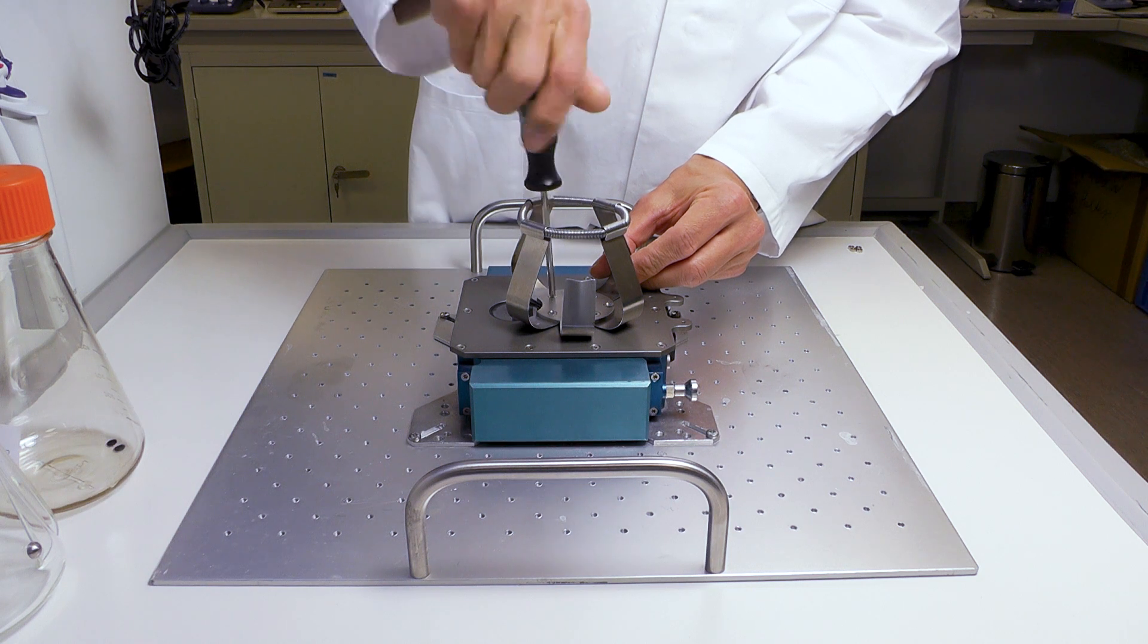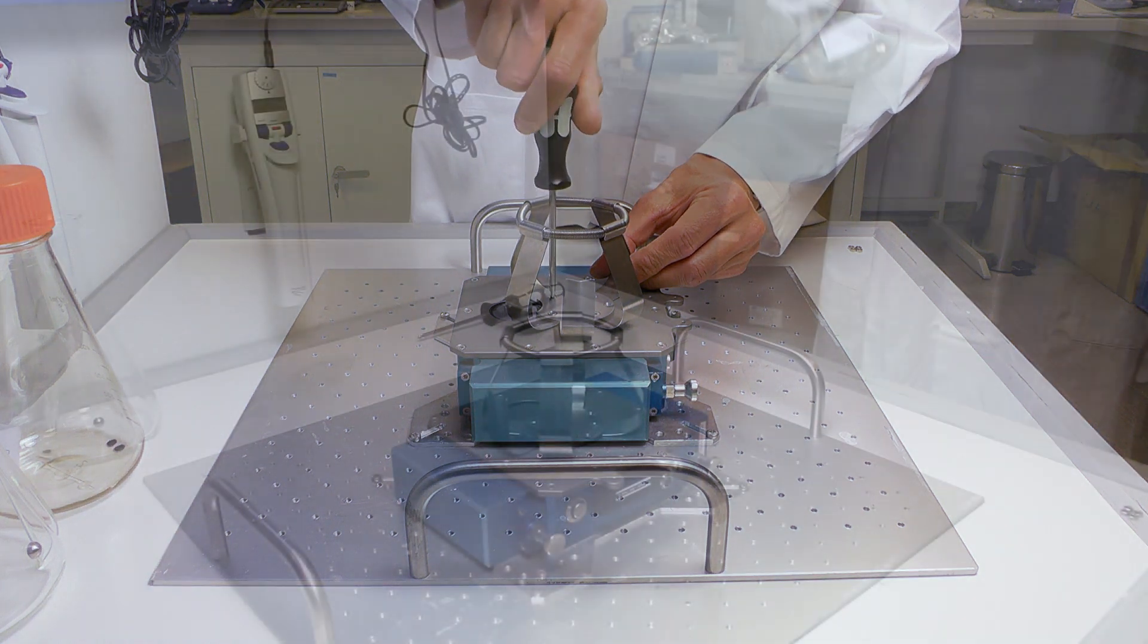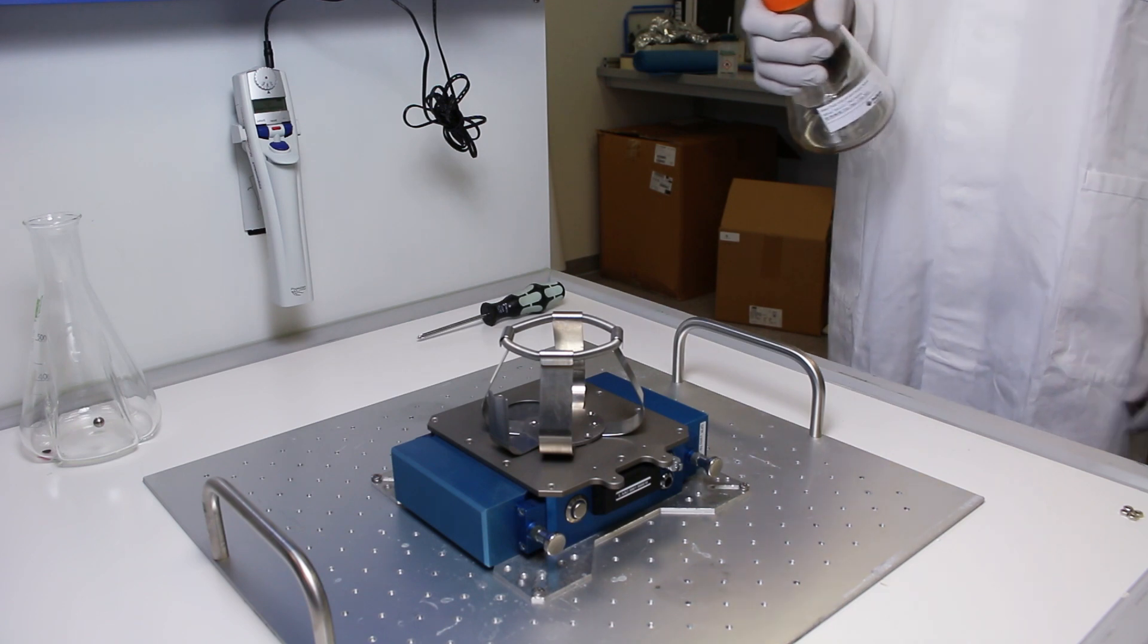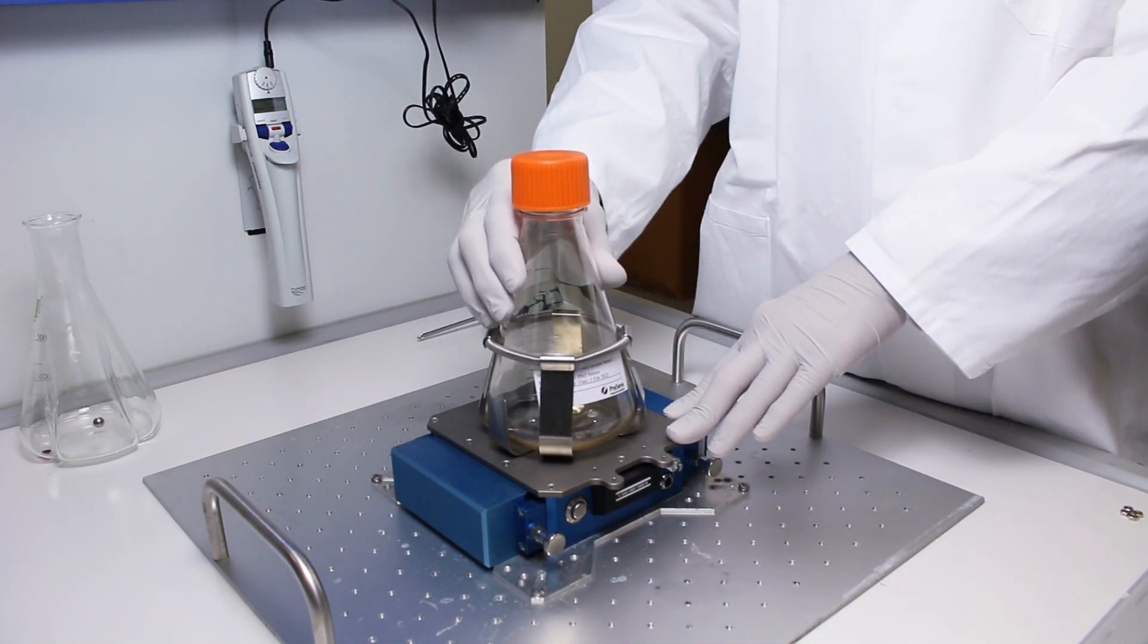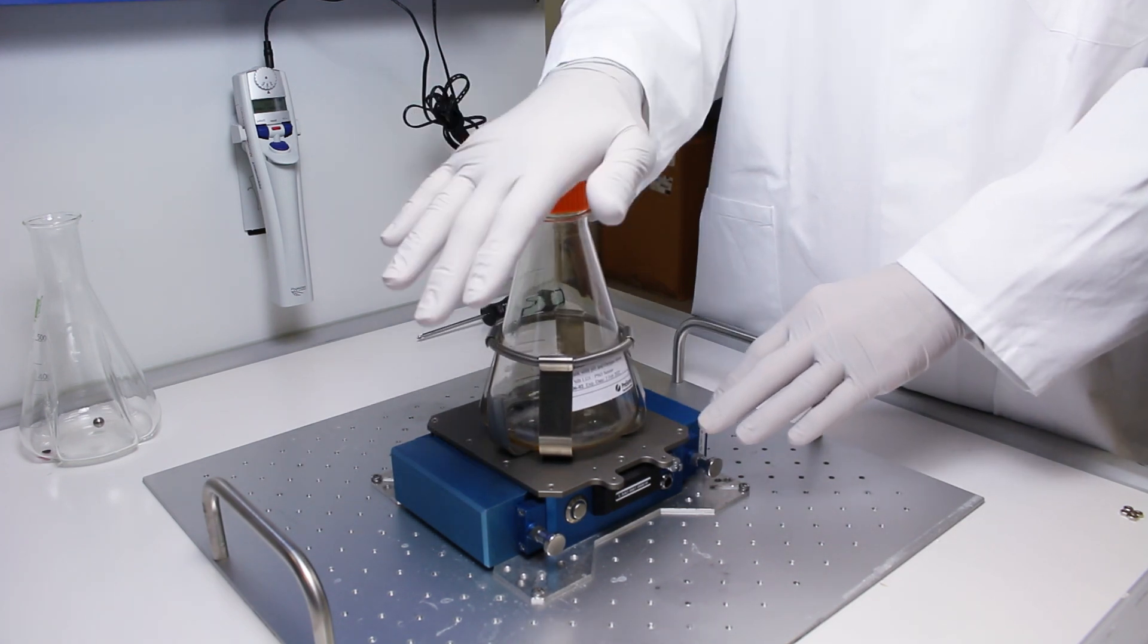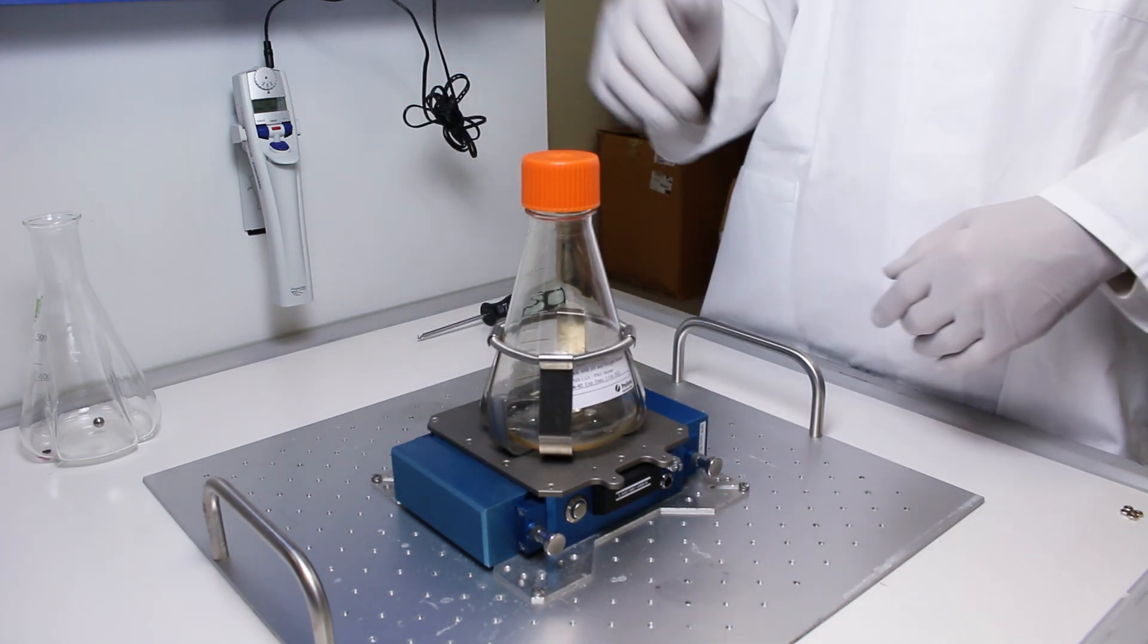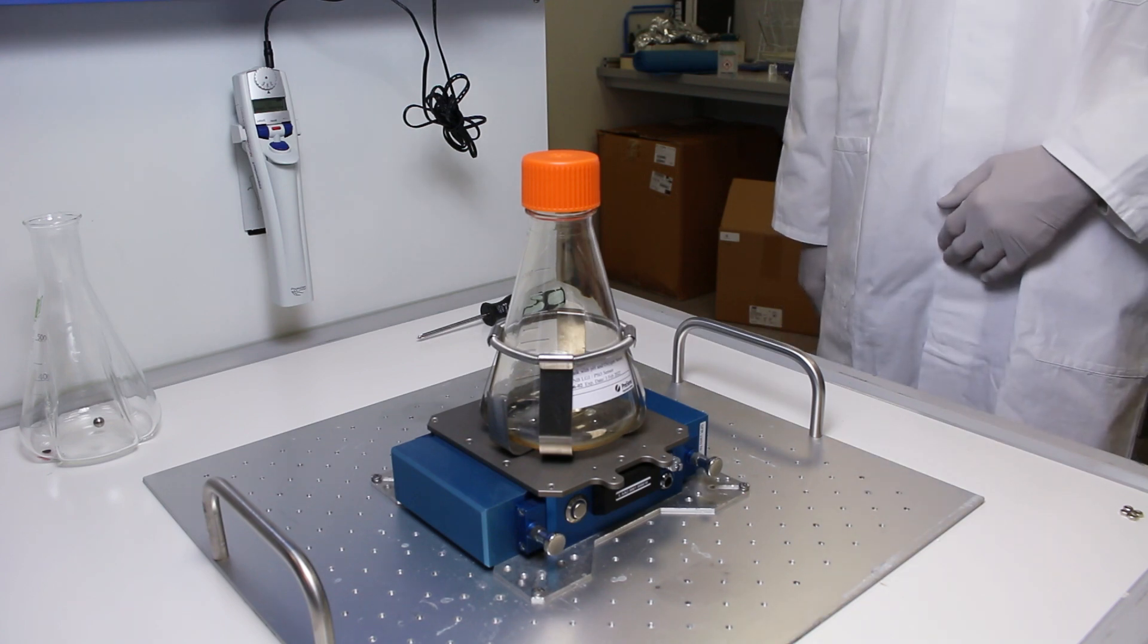When the clamp is attached to the reader you can insert your sensor flask. A plastic sensor flask is put in the clamp and then turned until you feel the two knobs on the flask bottom snap into the holes on the base plate. To make sure the flask is properly inserted press down on the flask once more.